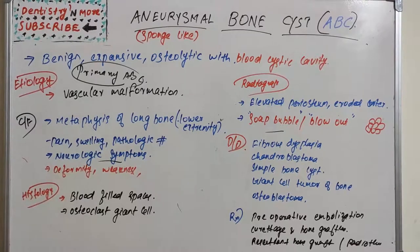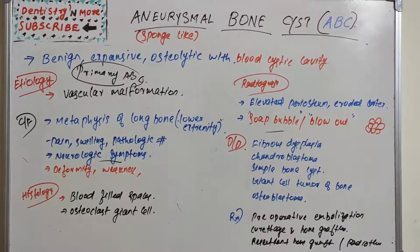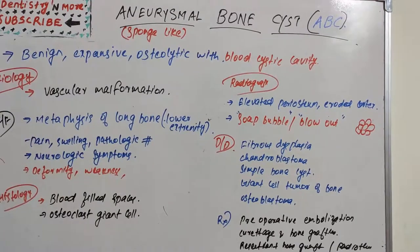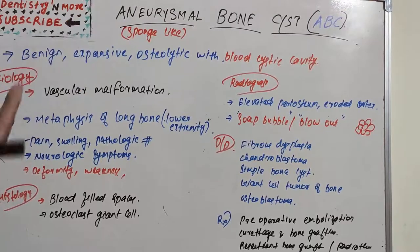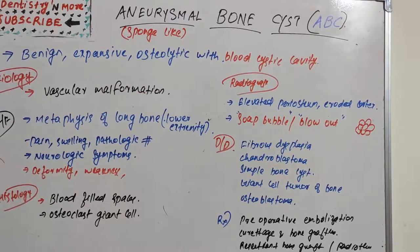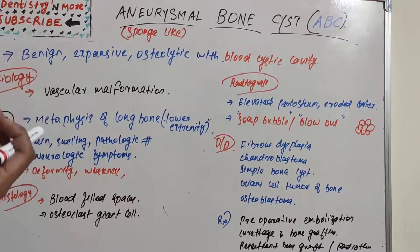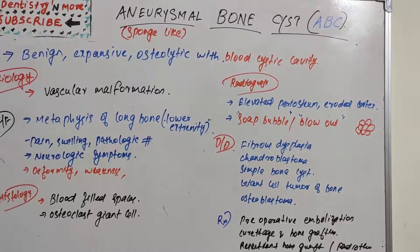Hello everyone, welcome back to another session in Dentistry and More. Today we have a bone lesion known as Aneurysmal Bone Cyst or ABC lesion. Aneurysm refers to a change in the artery — a sponge-like change or localized growth happening in the artery, seen within the bone due to malformation of the artery, resulting in an osteolytic type of lesion. Let's see the details of ABC.